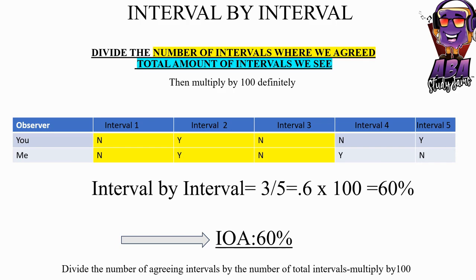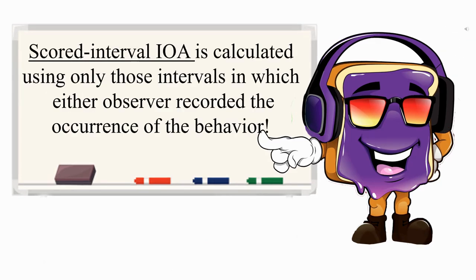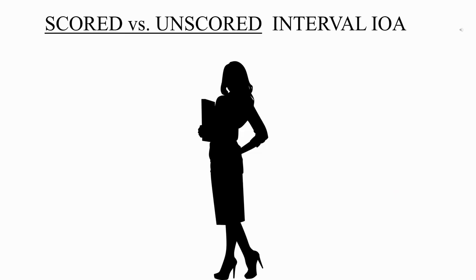Scored interval IOA is calculated using only those intervals in which either observer recorded the occurrence of the behavior. Only those intervals in which either or both observers recorded the occurrence of the target behavior are used in calculating scored interval IOA.